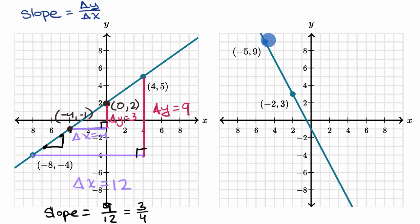So let's say as we go from this point to this point, what's going on? So we could do change in x first. So our change in x, we're going from x equals negative five to x equals negative two. So our change in x is equal to positive three.